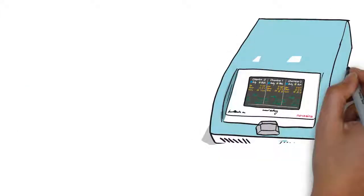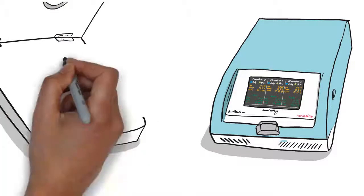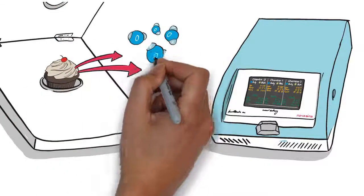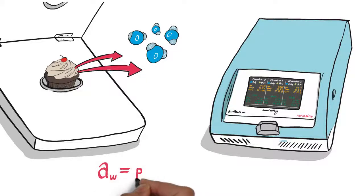Walter's Novasina Water Activity Meter is measuring the free water that can leave the product. It effectively detects this unbound water by measuring the equilibrium relative humidity over the surface. This value is then converted into a water activity measurement.